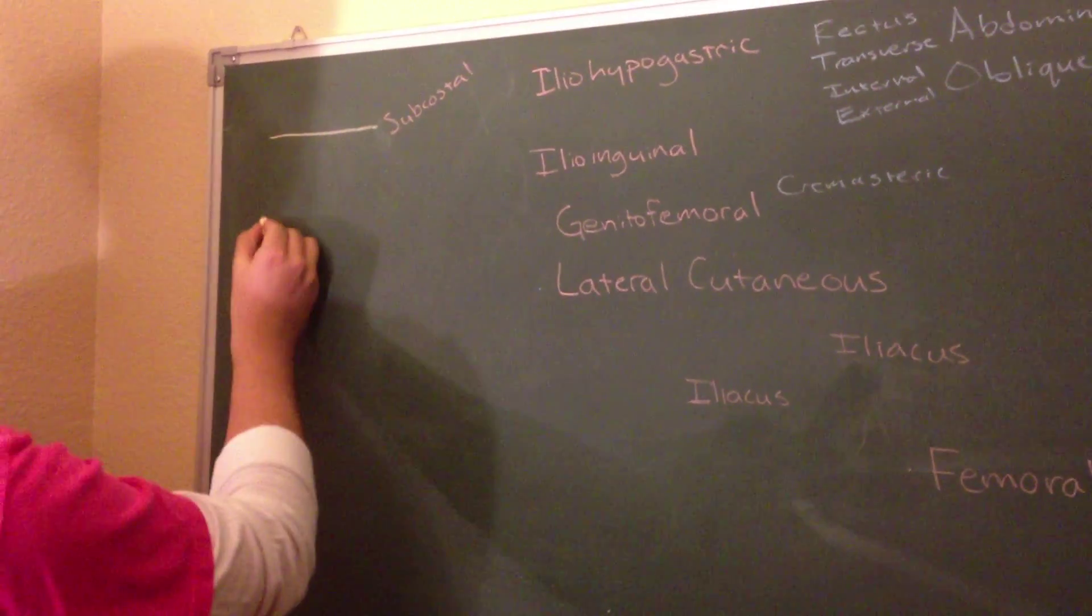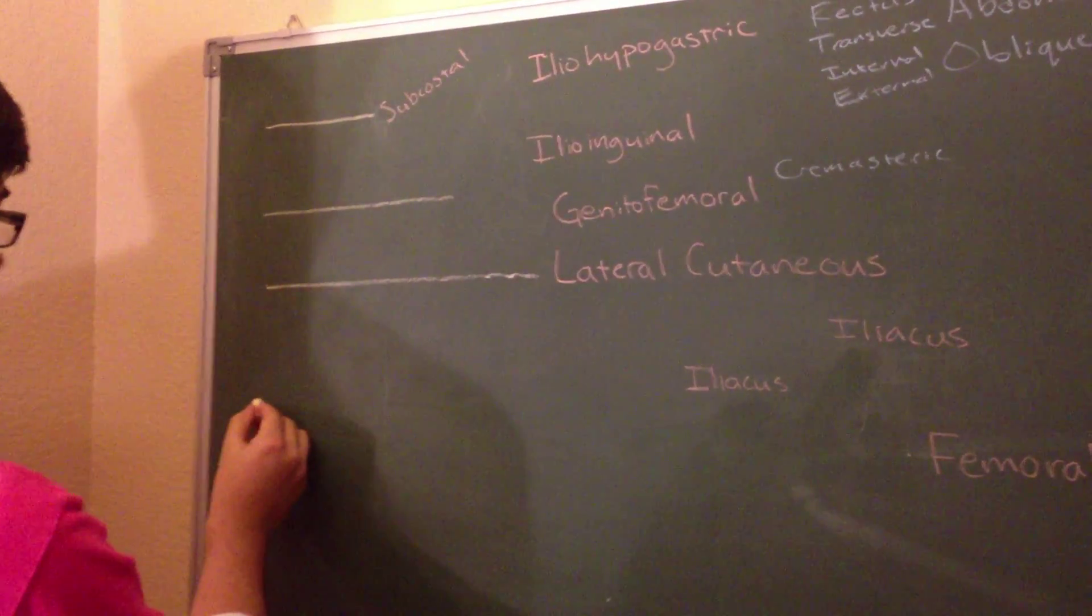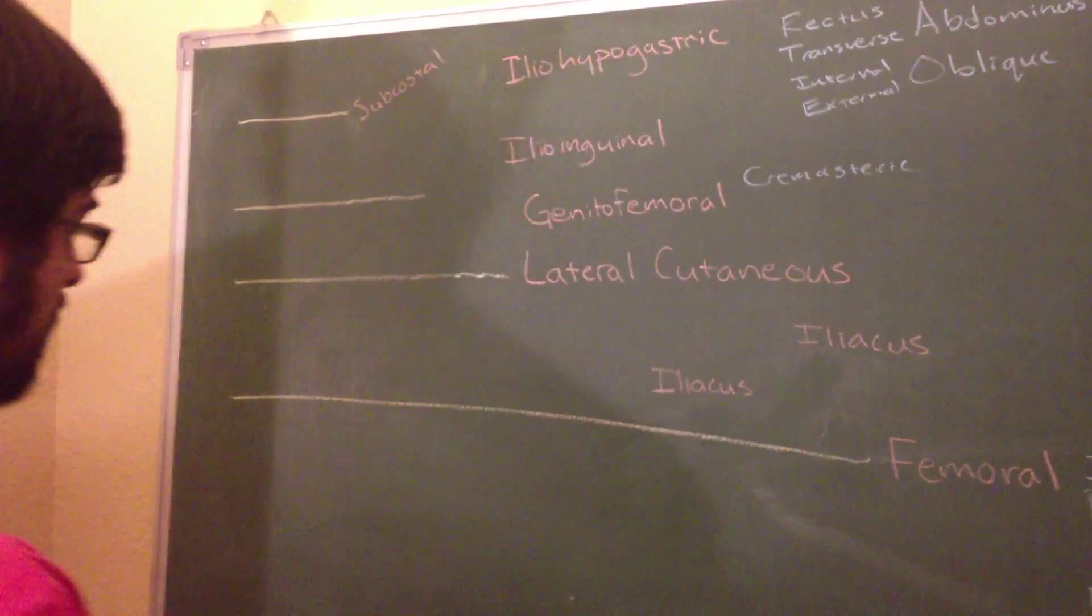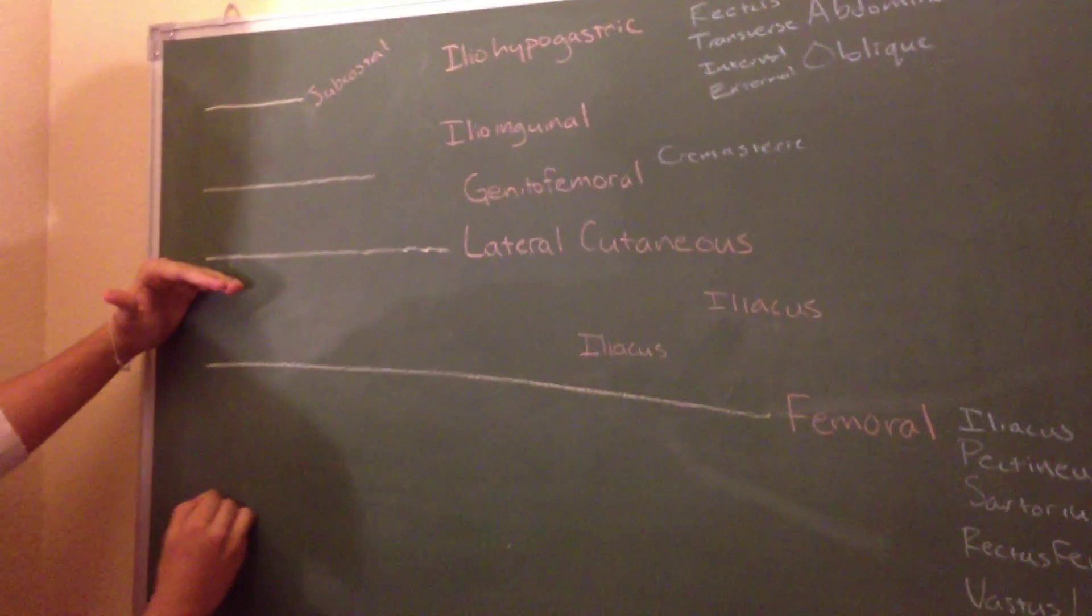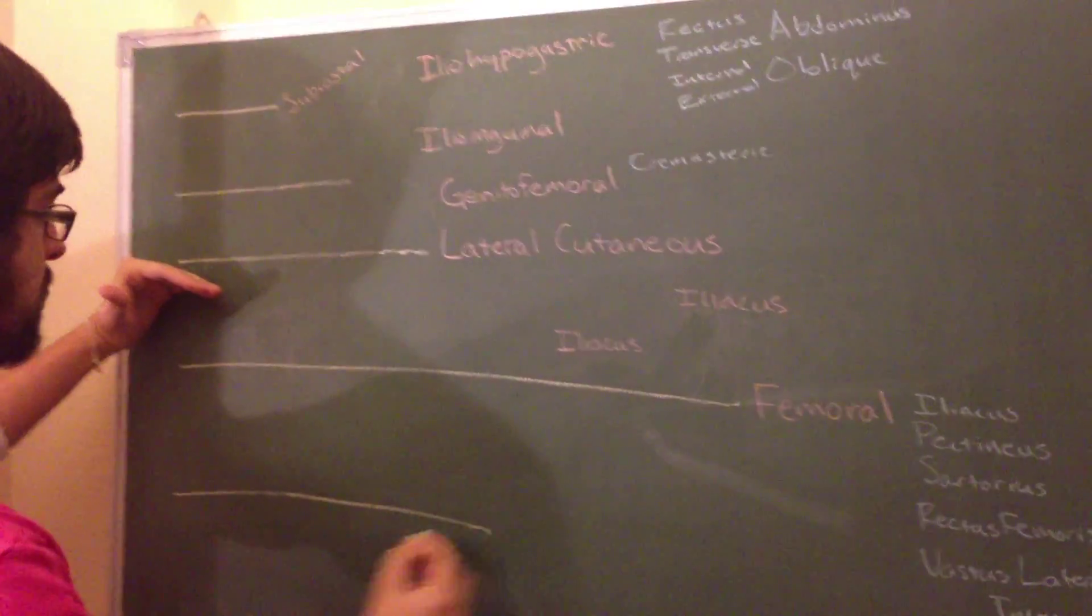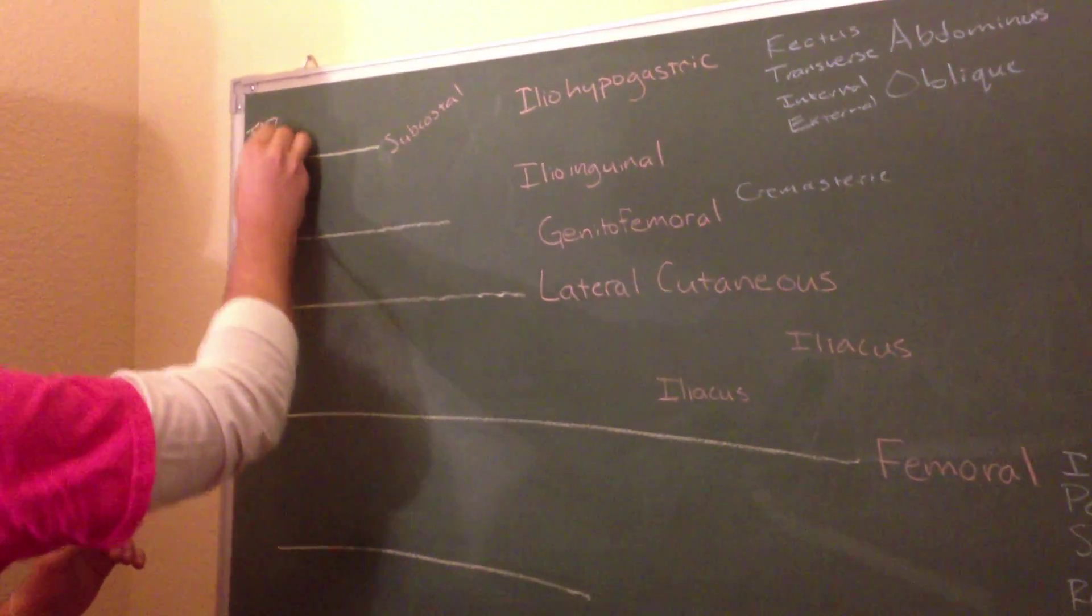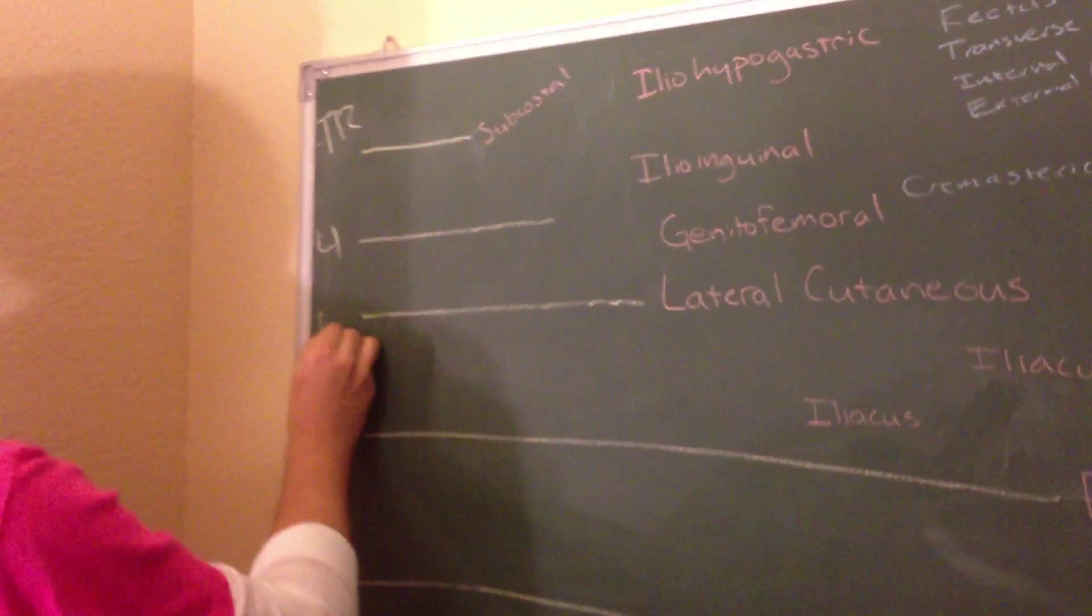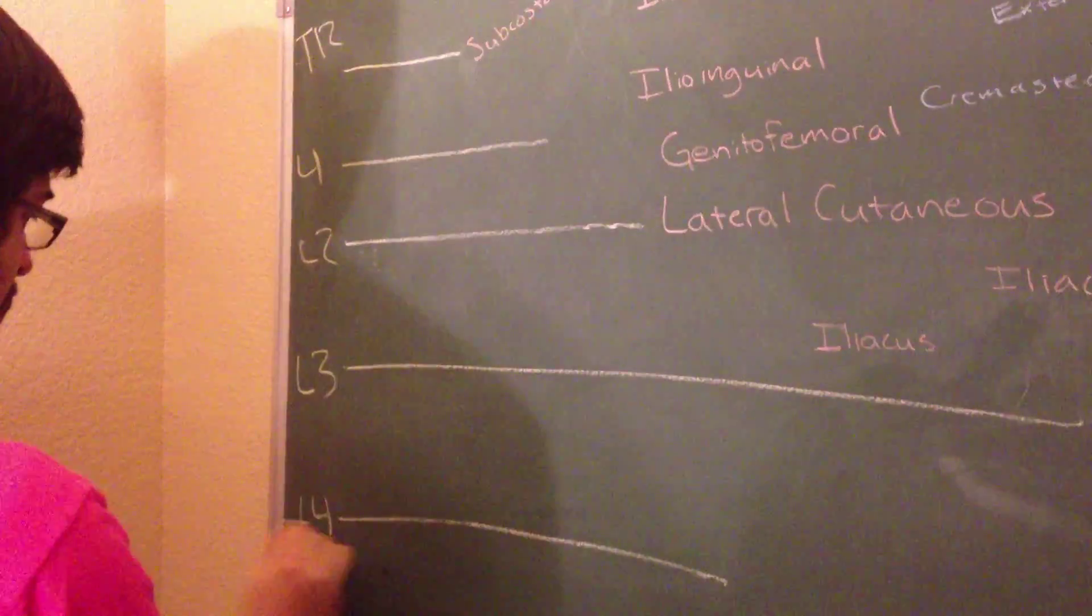So we have our first one, second, third, and fourth. Then we want a fifth one that we want to be slightly longer than our third line. Okay, so this gives us T12, L1, L2, L3, and L4.